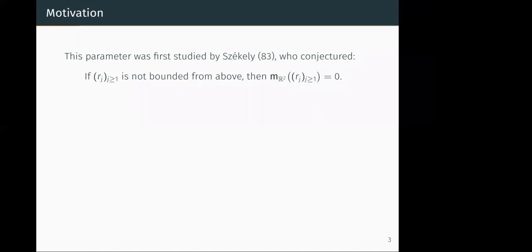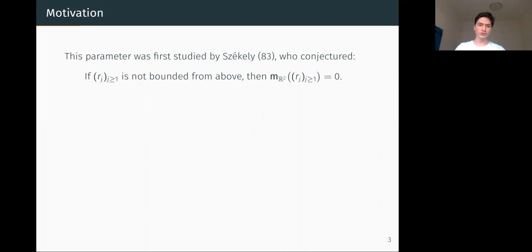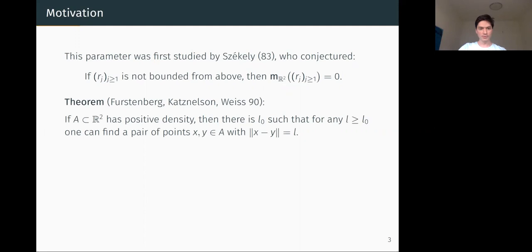This parameter was first studied by Székely in 1983, who conjectured that if the sequence of forbidden distances is not bounded from above, then the extremal density of a set avoiding all these distances is zero. This conjecture was later proven by Furstenberg-Katznelson-Weiss using ergodic theory, showing that if a set A on the plane has positive density, then there is some L0 such that for any L greater than L0, one can find a pair of points in the set at distance L. In other words, sets of positive density realize all sufficiently large distances.